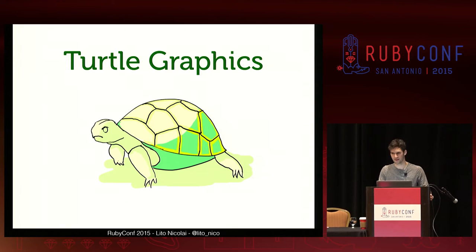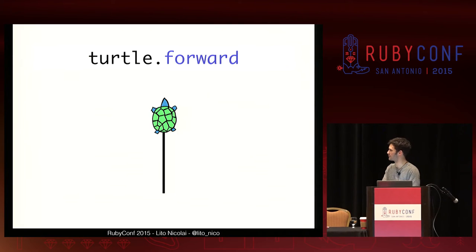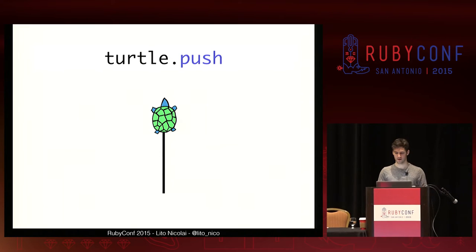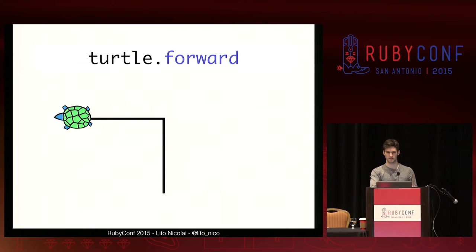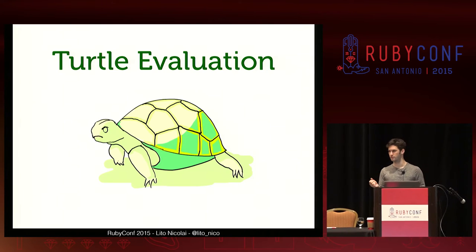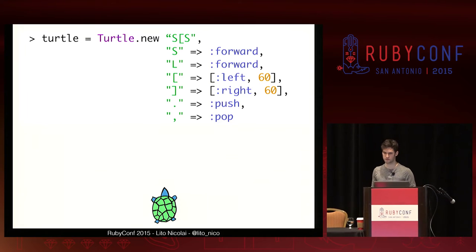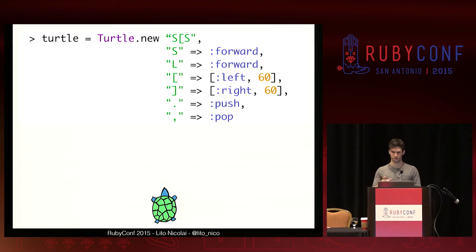To do that, we'll introduce turtle graphics. You ever played around with turtle graphics? The Logo programming language maybe you were introduced to as a kid? The idea is you have a turtle, and you can command this turtle. You can tell the turtle to do things like move forward — and the turtle will move forward and draw as it goes. You can say: save our current position, push that onto a stack, turn left any number of degrees, move forward, and then recall the previous position and zip back to that.